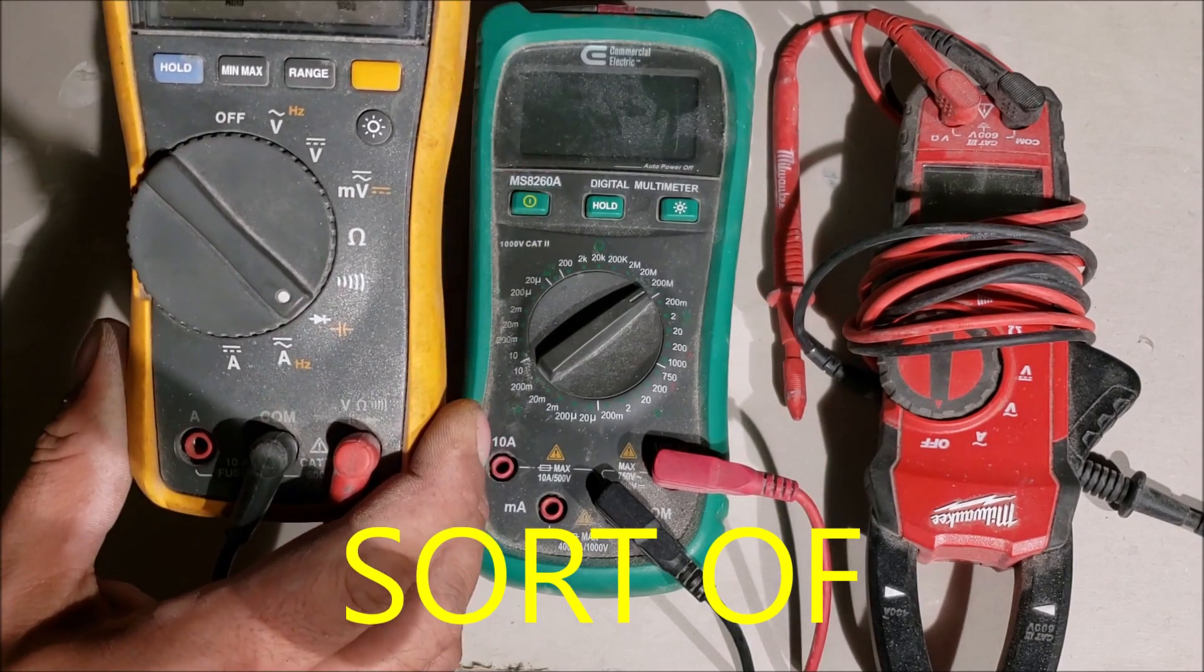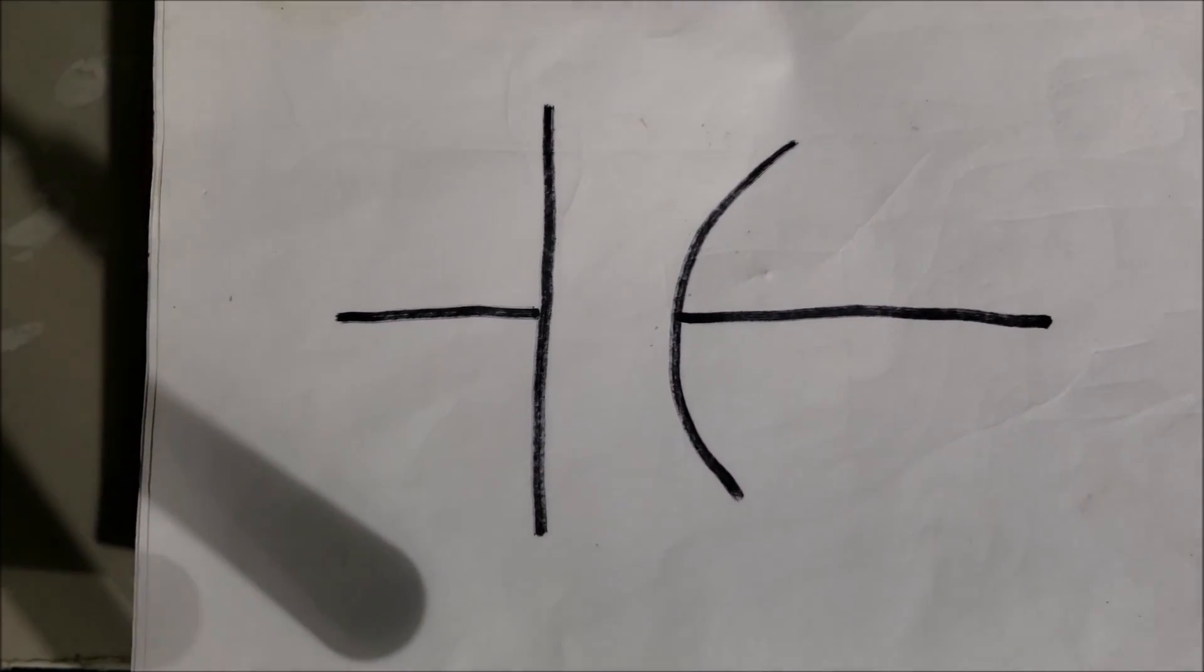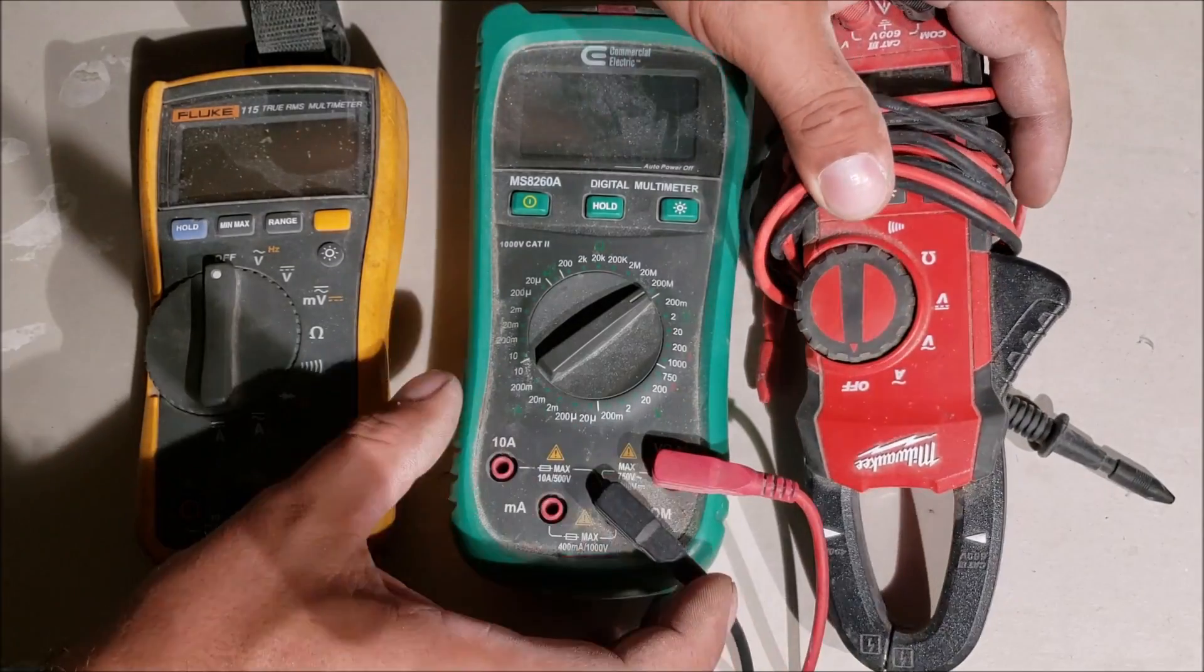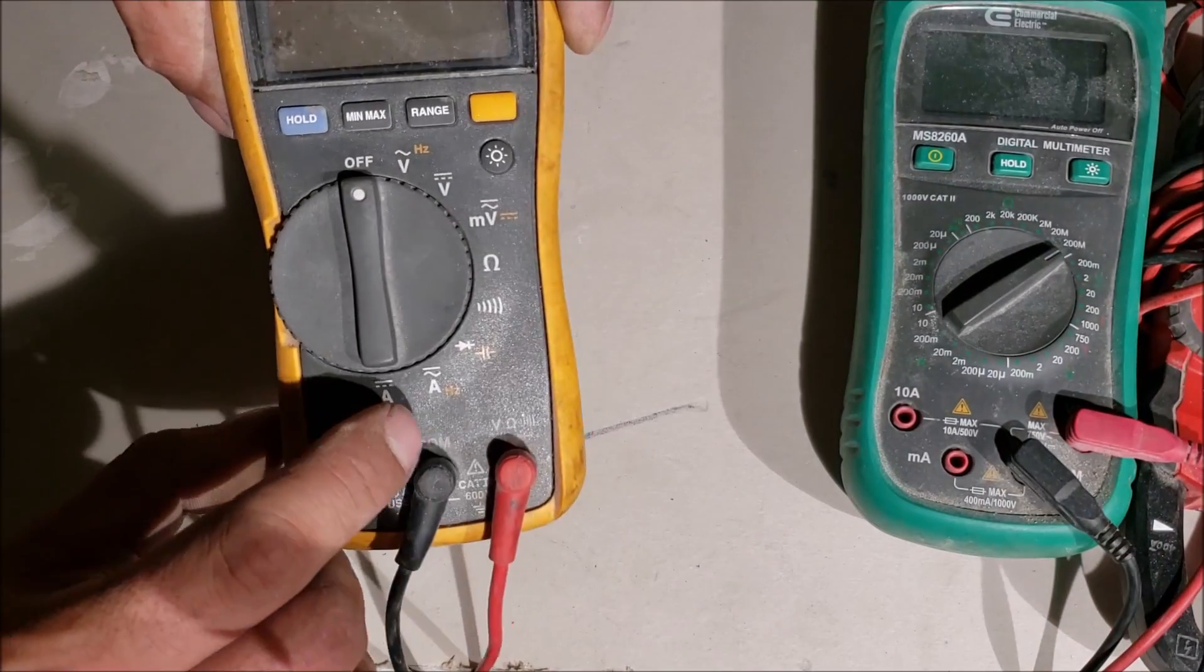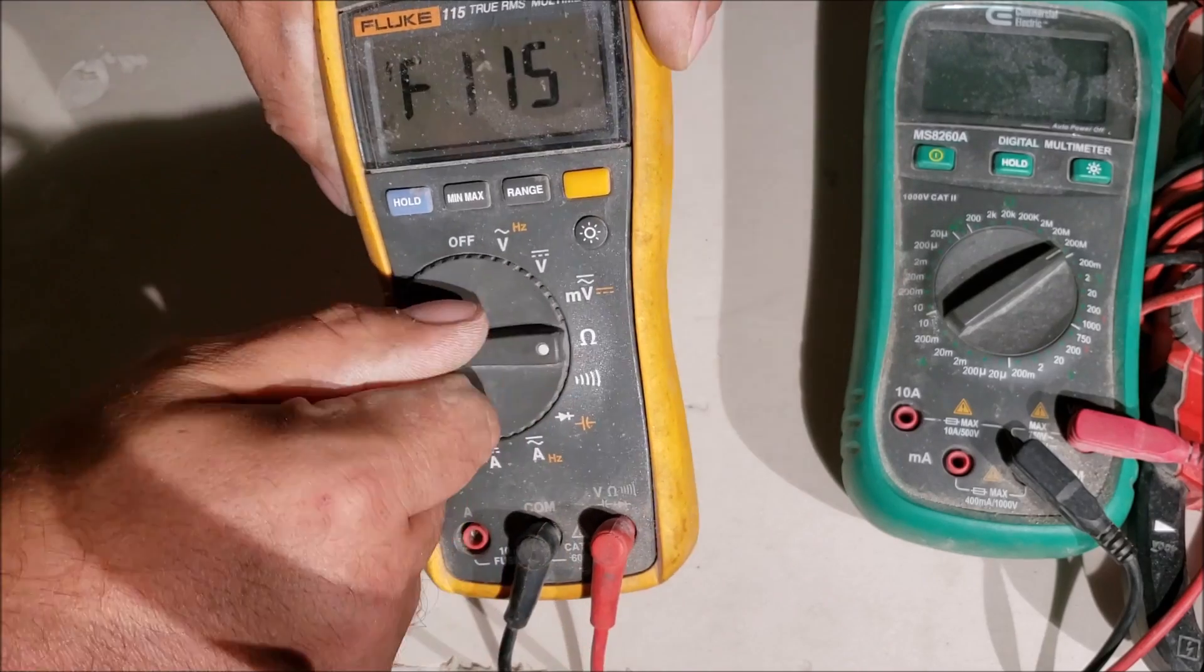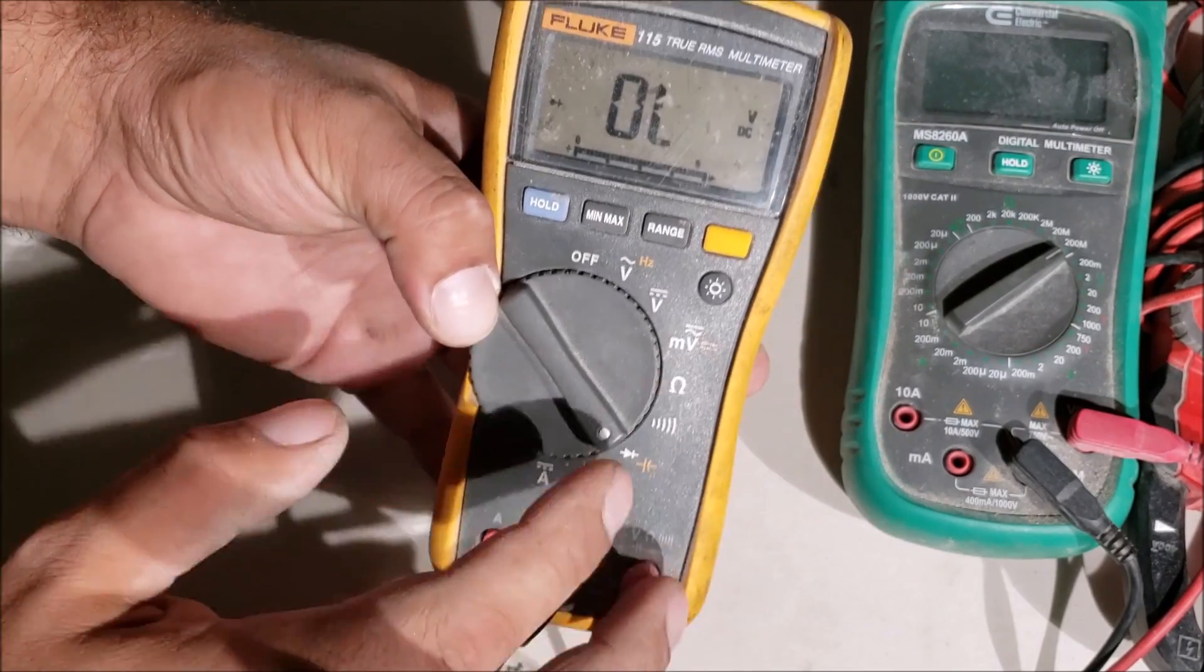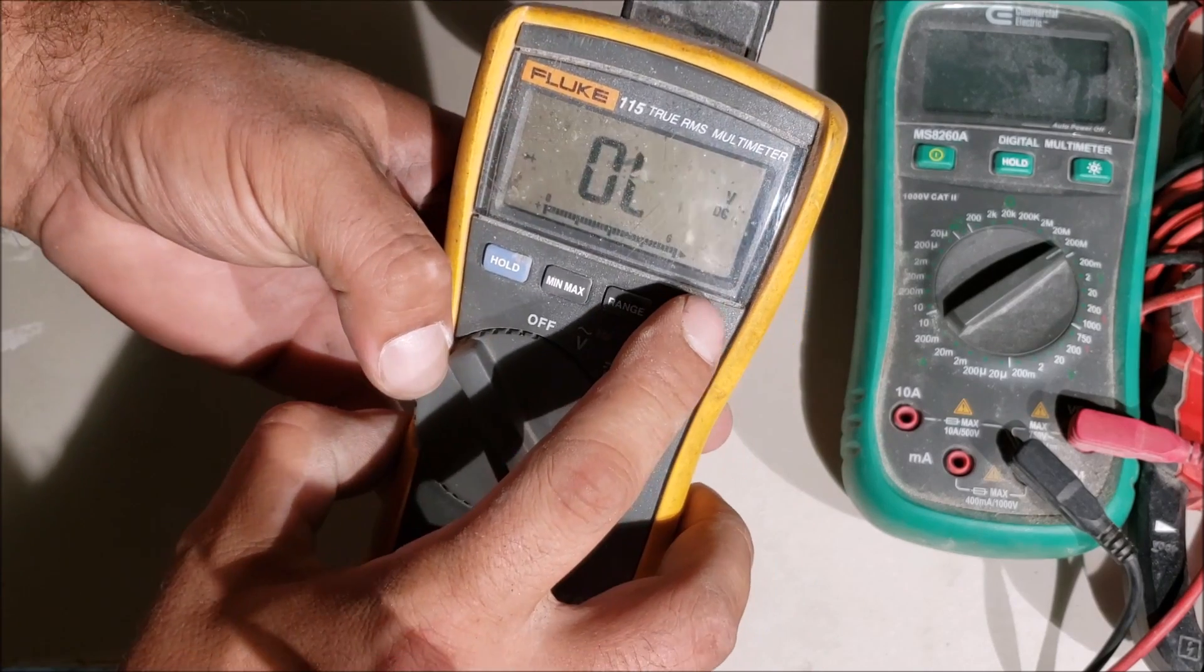First of all, your meter has to have that symbol right there. If your meter does not have a symbol like this, you have to get one because you're not going to be able to 100% check the capacitor. These three meters, this is the only one that has it. Let's go ahead and switch it on.